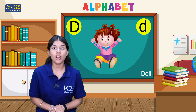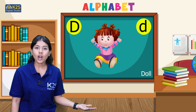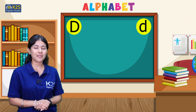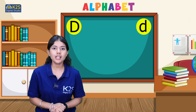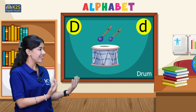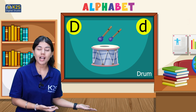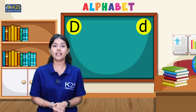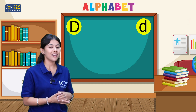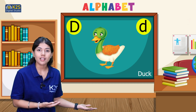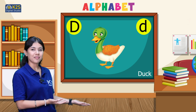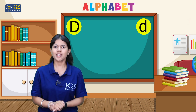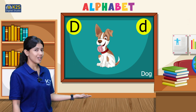The second word we are having is doll. Doll starts from letter D — D for doll! The third word is drum. Drum starts with letter D. And the fourth word we are having from letter D is duck. D for duck!